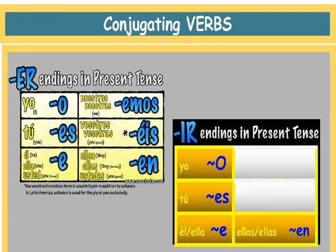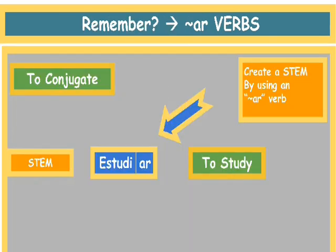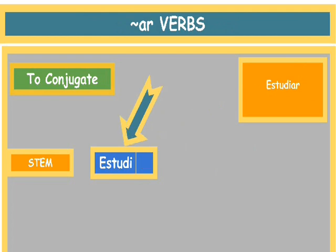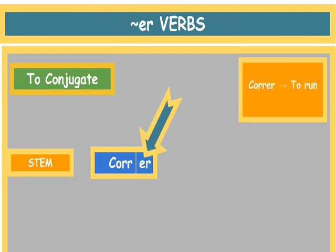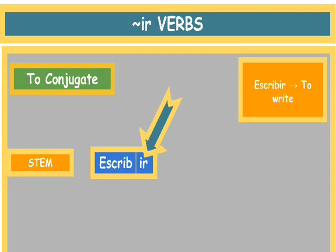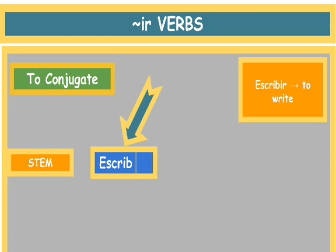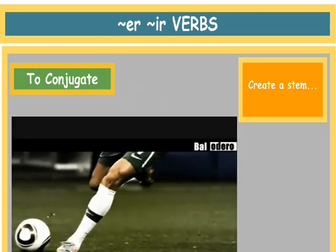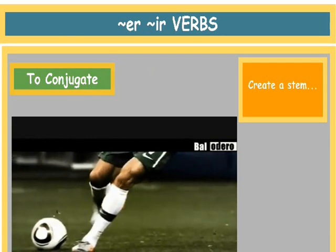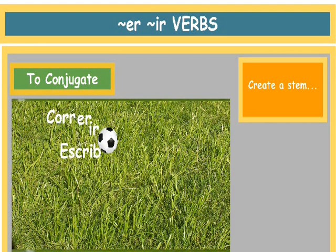This is important to remember. We remember that we were creating a stem by taking out the AR in order to be able to conjugate it. It is going to be the same thing for ER verbs like correr, meaning to run, and it will be the same thing for a verb ending in IR like escribir, meaning to write. We kick the ER and IR out of the verb to create the stem.